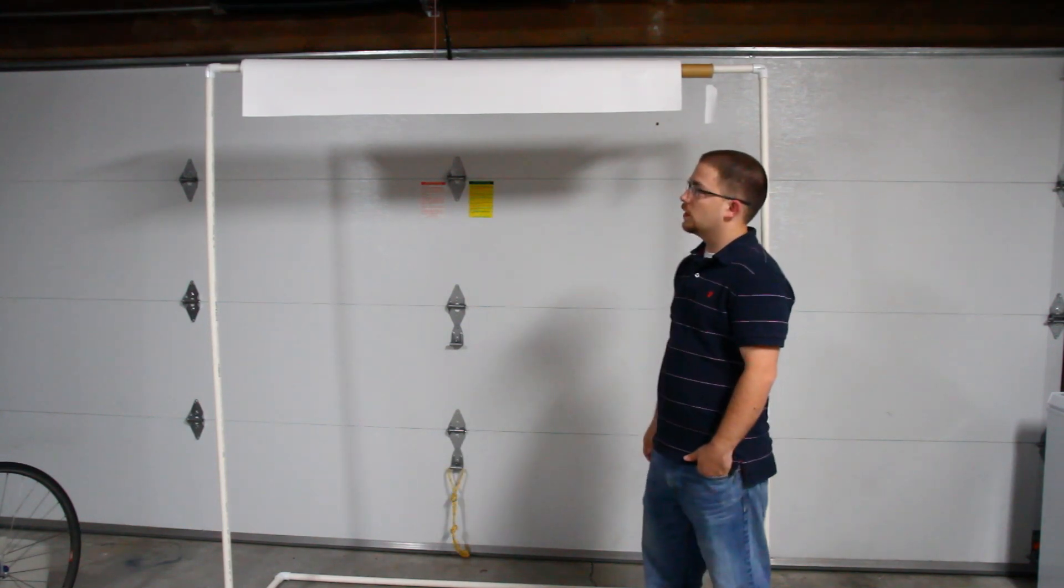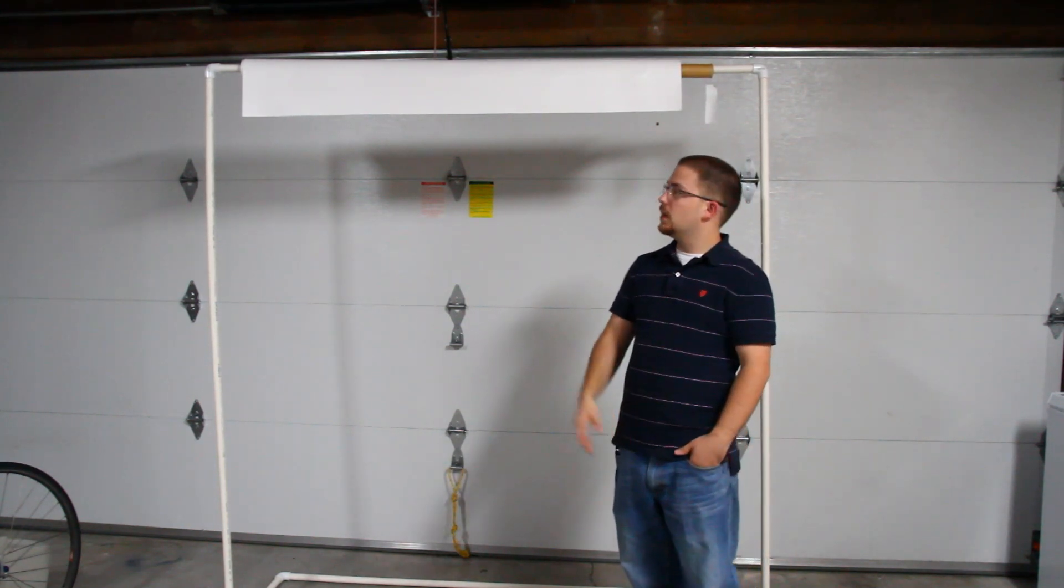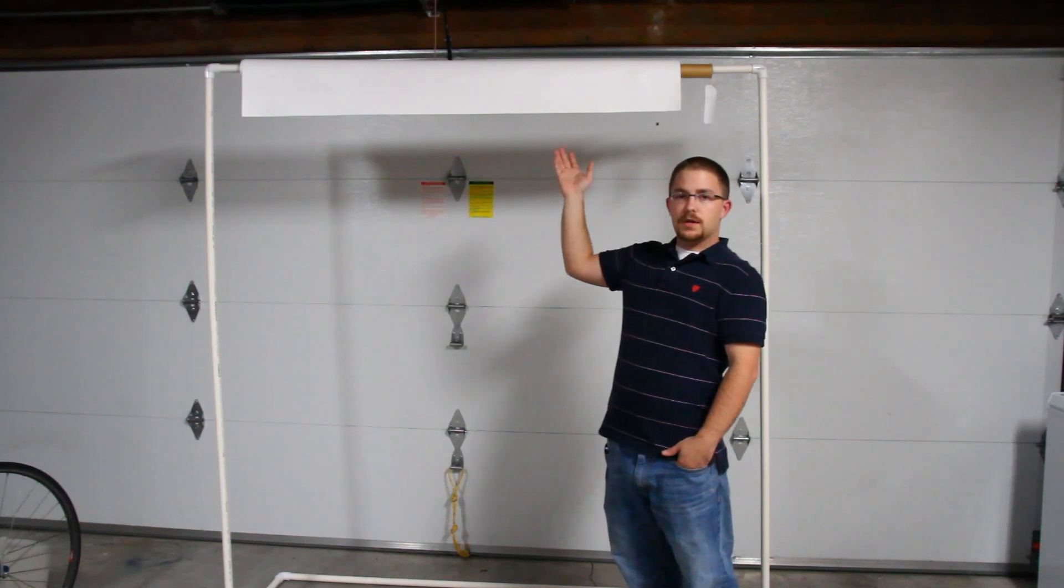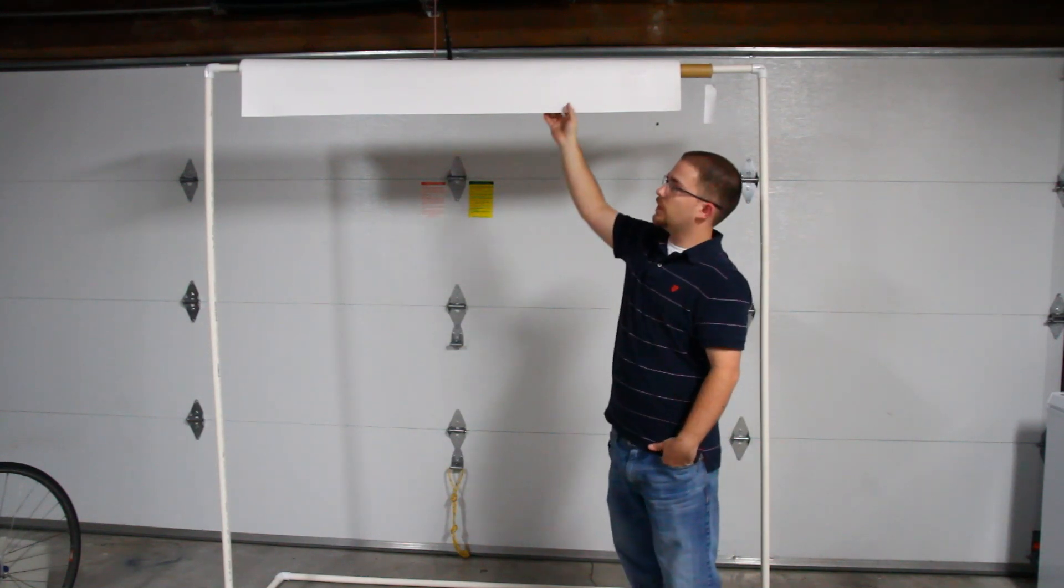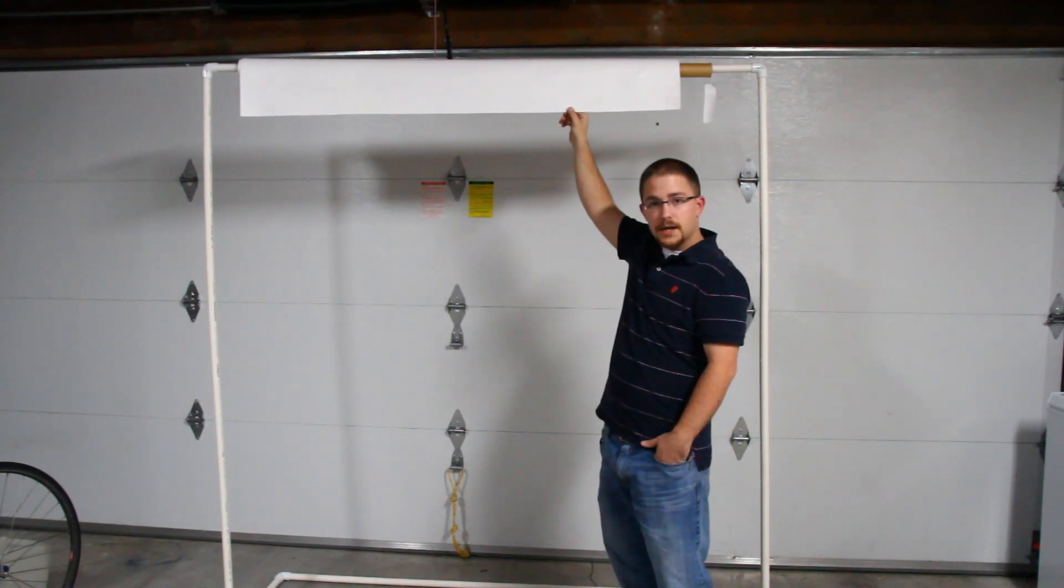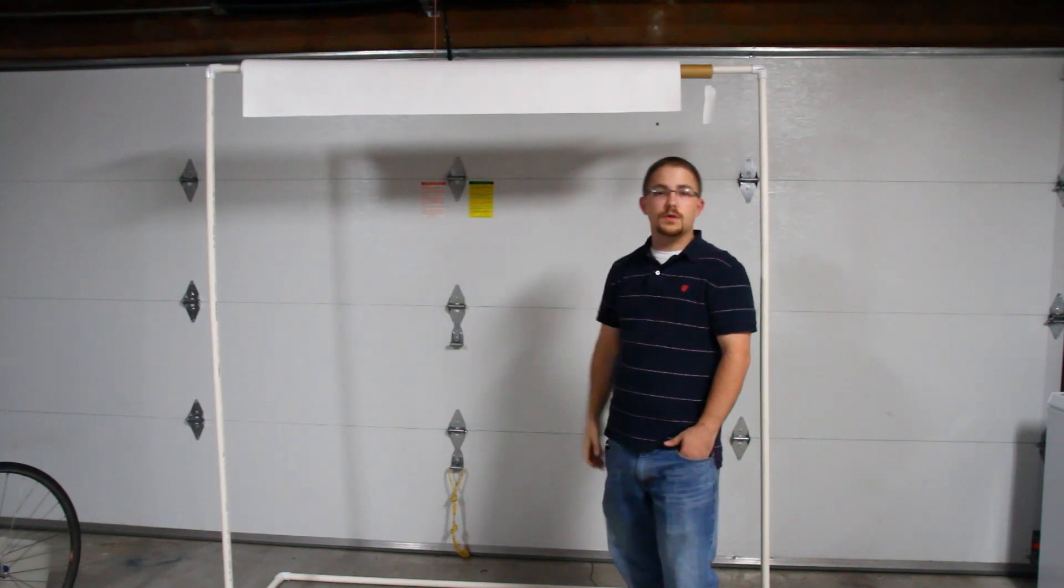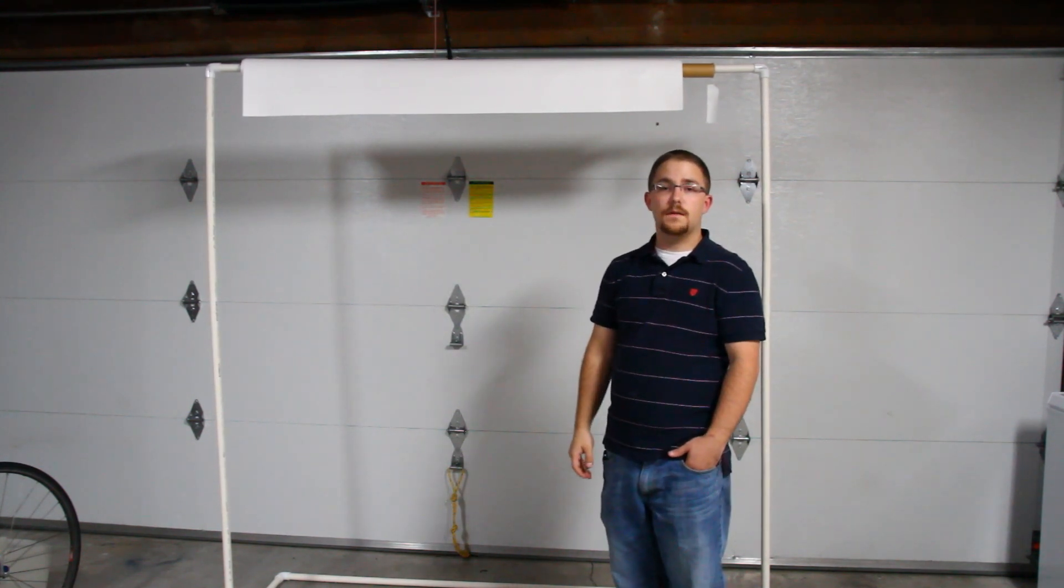Number one problem so far, let's back up a second. Let's talk about what we actually have here. We've got a piece of 55 inch wide marine vinyl. The marine vinyl was purchased at Joann Fabrics.